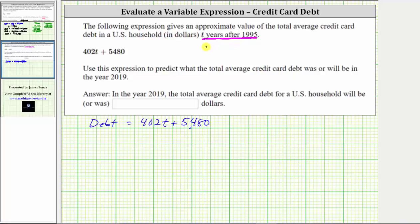To determine the value of T, we need to determine how many years after 1995 is the year 2019. So for the year 2019, T is going to be equal to the desired year minus the base year of 1995. And 2019 minus 1995 is equal to 24.